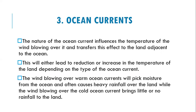The third factor is ocean currents. The nature of ocean currents affects the temperature of the wind blowing over them and transfers this effect to the land adjacent to the ocean. This can lead to either a reduction or increase in the temperature of the land depending on the type of ocean current. Wind blowing over warm ocean currents picks up moisture and often causes heavy rainfall over the land.